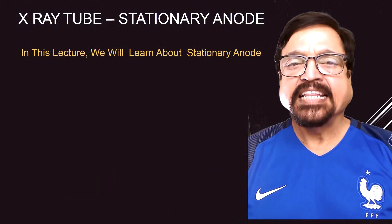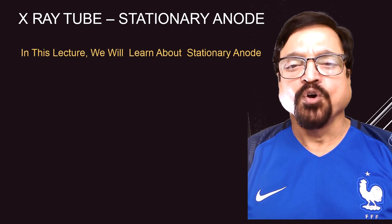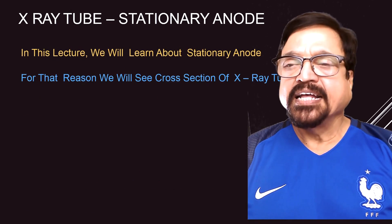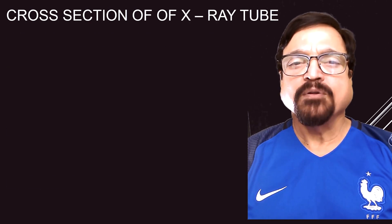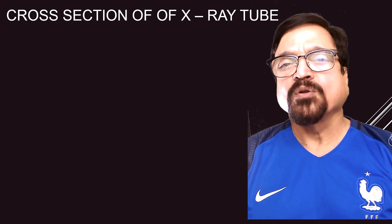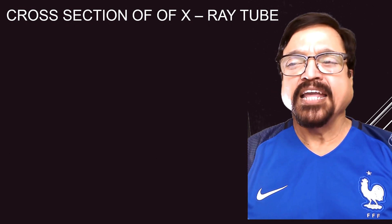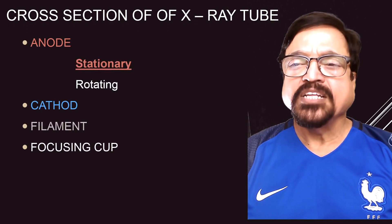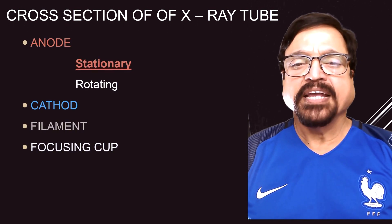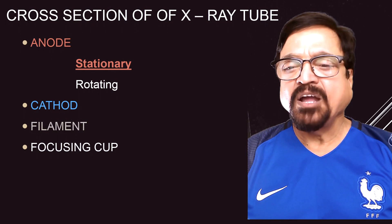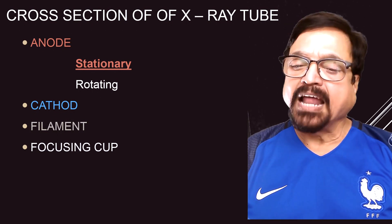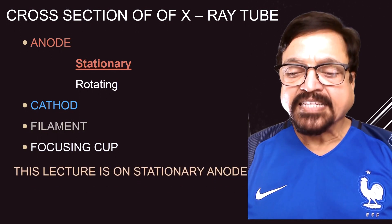In this series we are looking at the structure of an X-ray tube. In this we are going to cover the stationary anode, so this lecture is totally meant for the stationary anode only. If we have to see the remaining aspects like the rotating anode, that will be covered in different lectures. In the cross section of the tube we can see the anode, which is either stationary or rotating, the cathode, the filament, and the focusing cup.